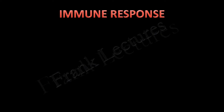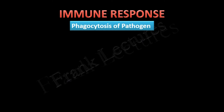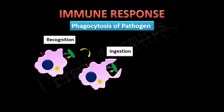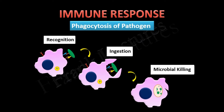Let us take an example to understand what immune response is: phagocytosis. When a phagocyte recognizes a pathogen inside the body such as bacteria, it ingests and internalizes it. Then in a separate compartment, microbial killing takes place. From the production of phagocytes to their activation, all is done by the immune system.